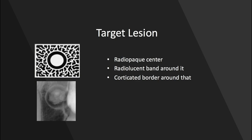We can also have a target lesion — it's very interesting with a unique structure. It has a radiopaque center, a clear radiolucent band that surrounds that, and then a corticated border around that — making it look like a target. The classic target lesion would be a complex odontoma, like we see here.